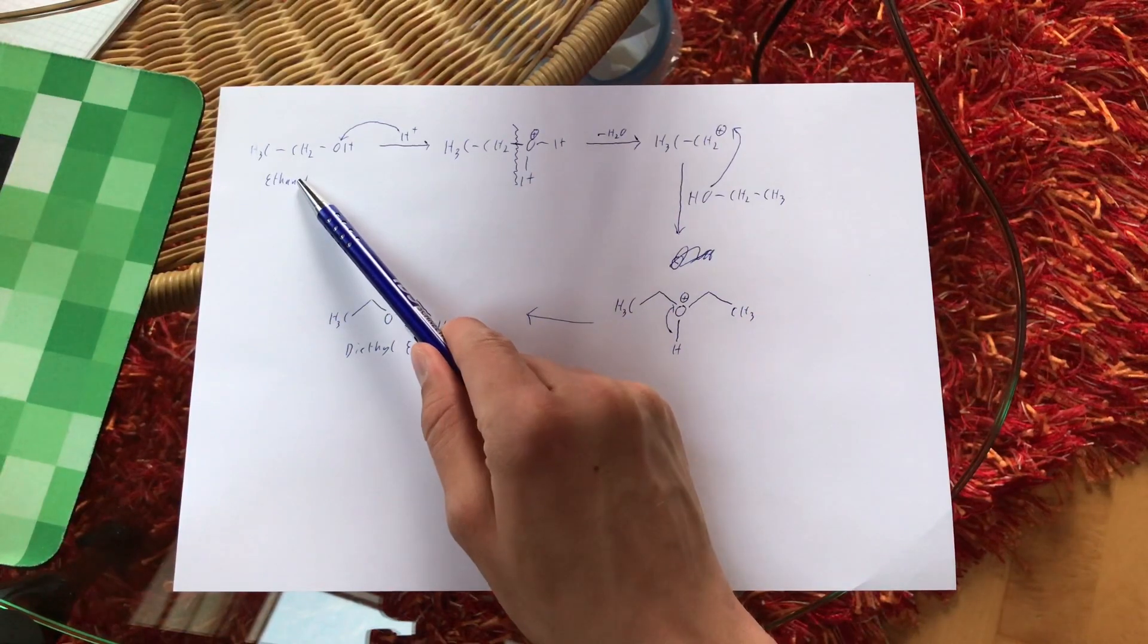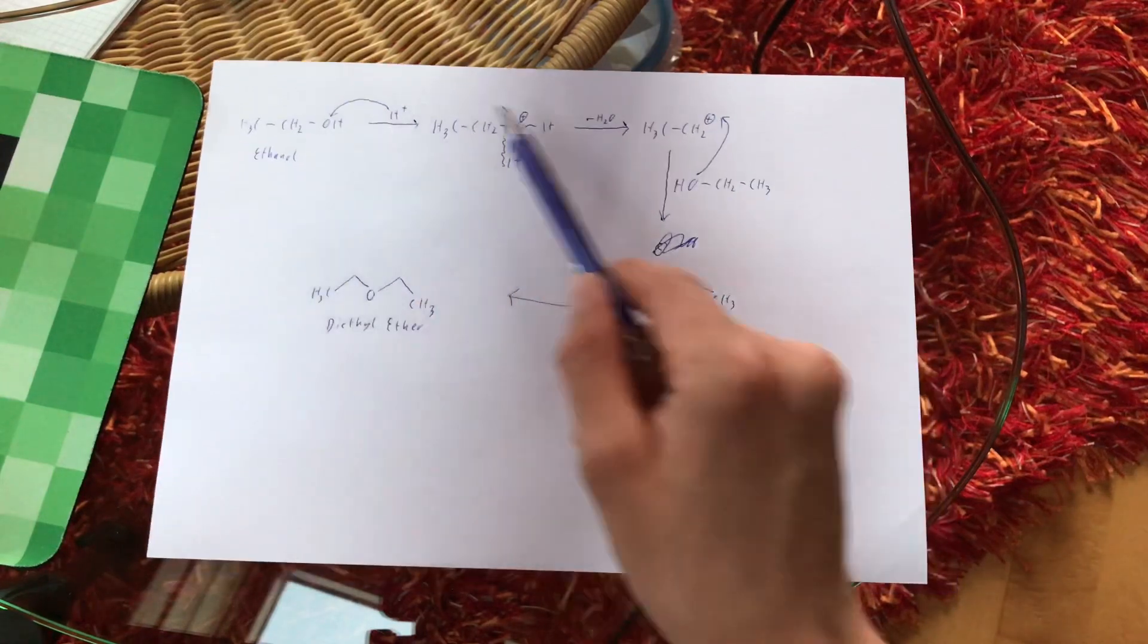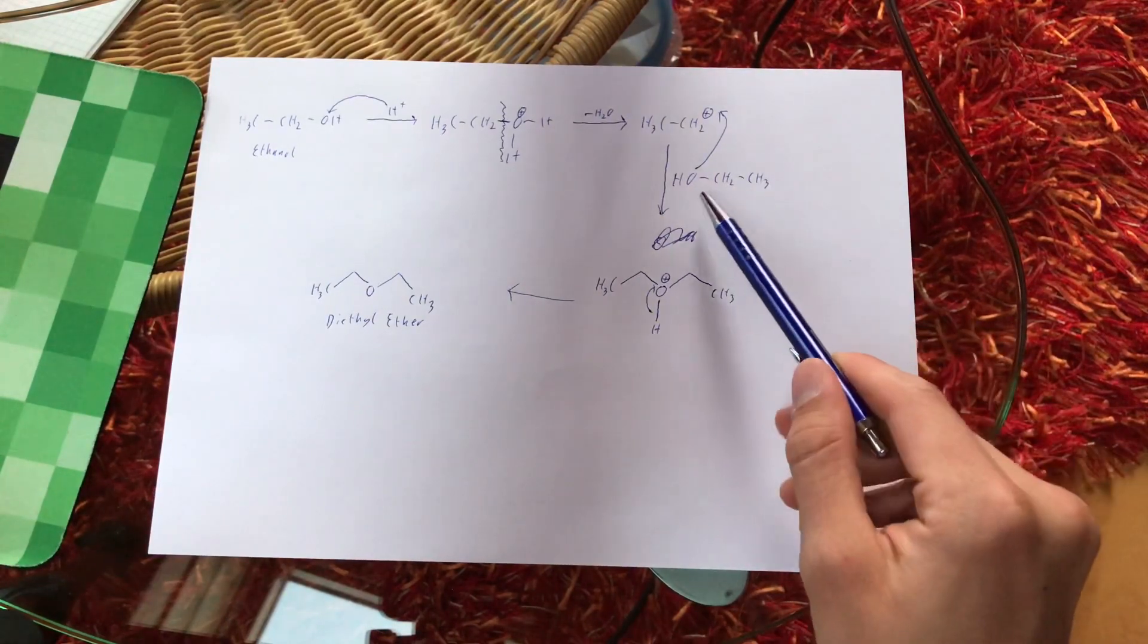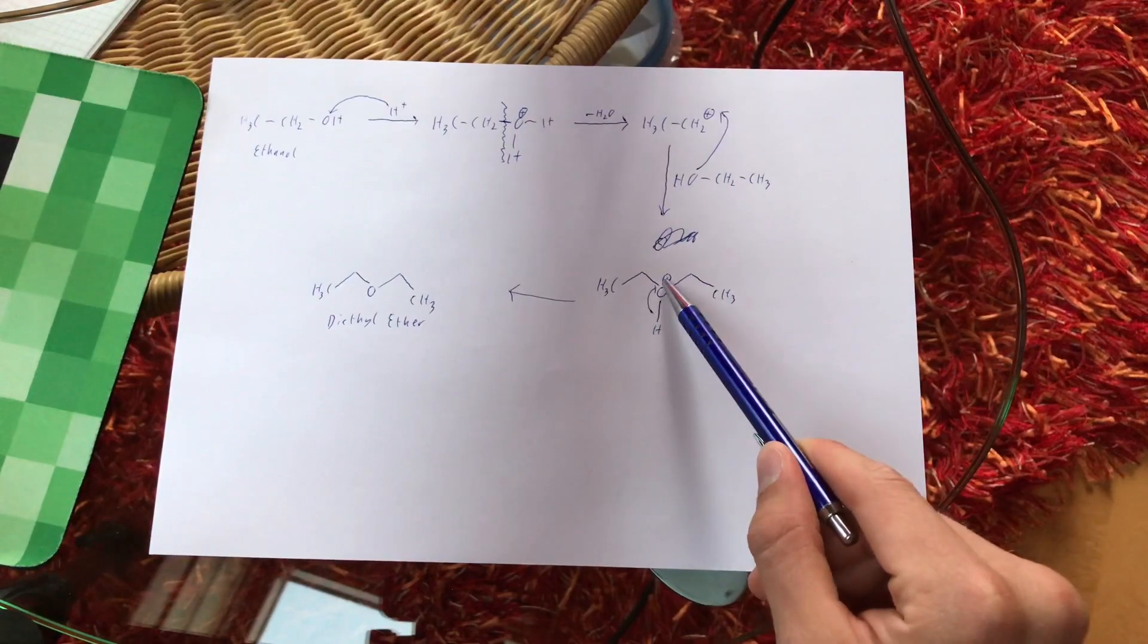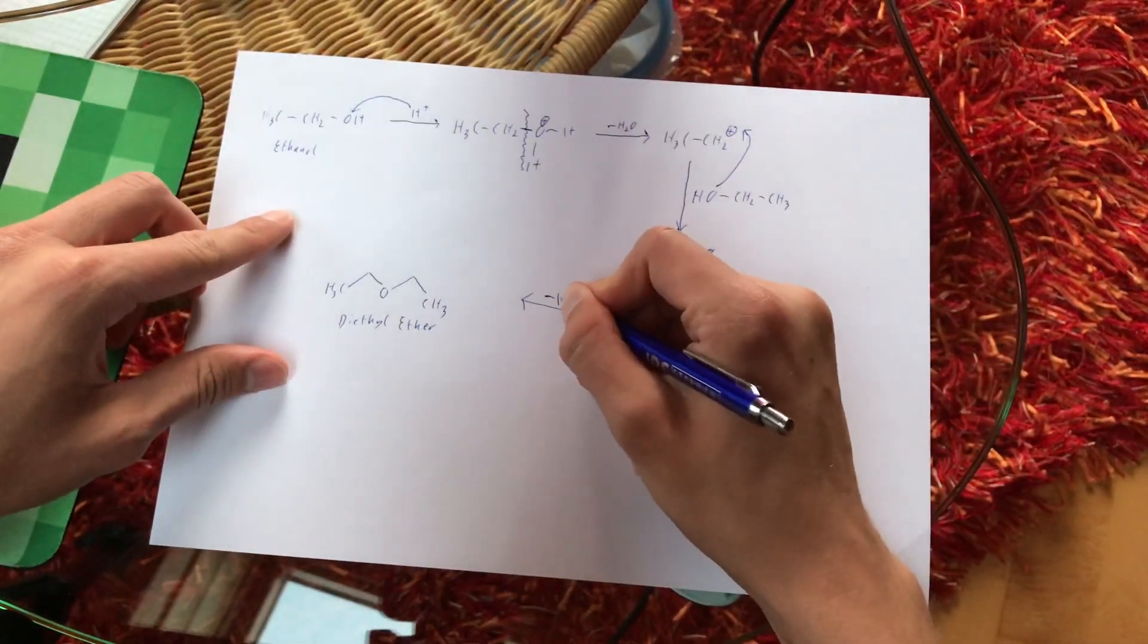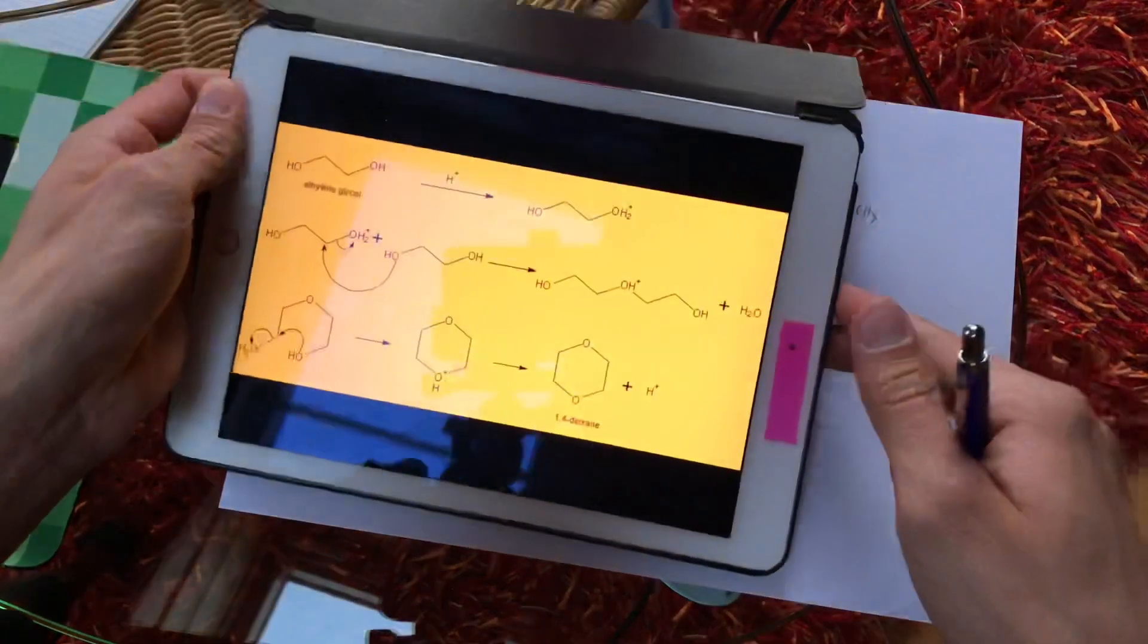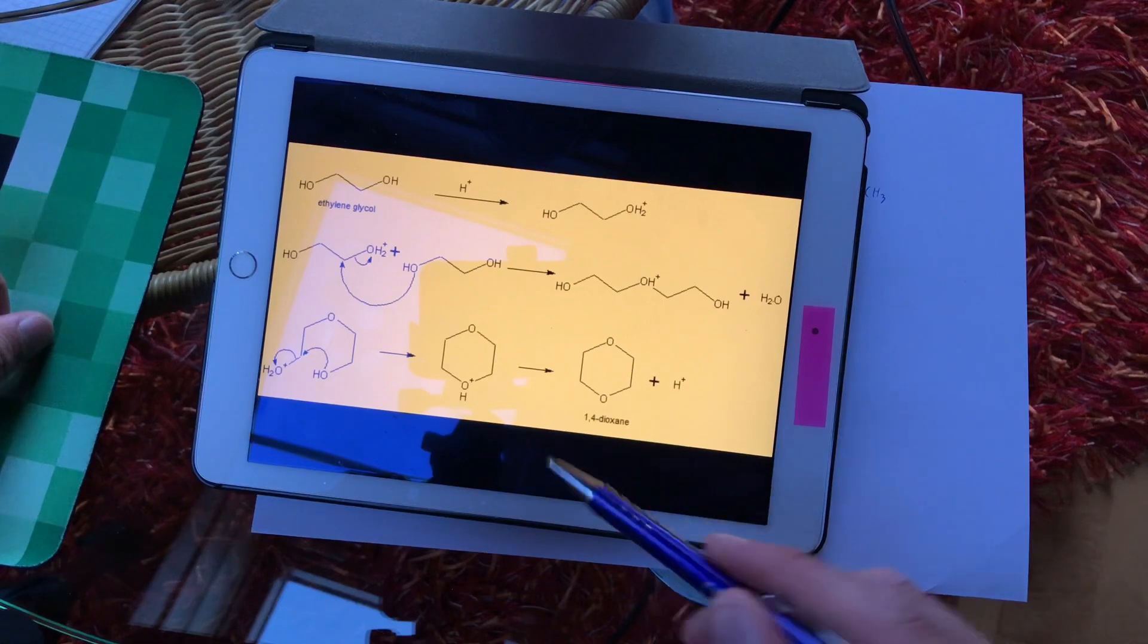With the example of ethanol I am going to explain the reaction mechanism to you. A proton attaches to our alcohol group. Water is given away and our positively charged ethyl group reacts with another molecule of ethanol to form this. This bond goes here and our proton is restored. I actually forgot to paint that in here and there we go and our product is diethyl ether. With ethylene glycol this happens first on one side and then on the other side to form 1,4-dioxane.